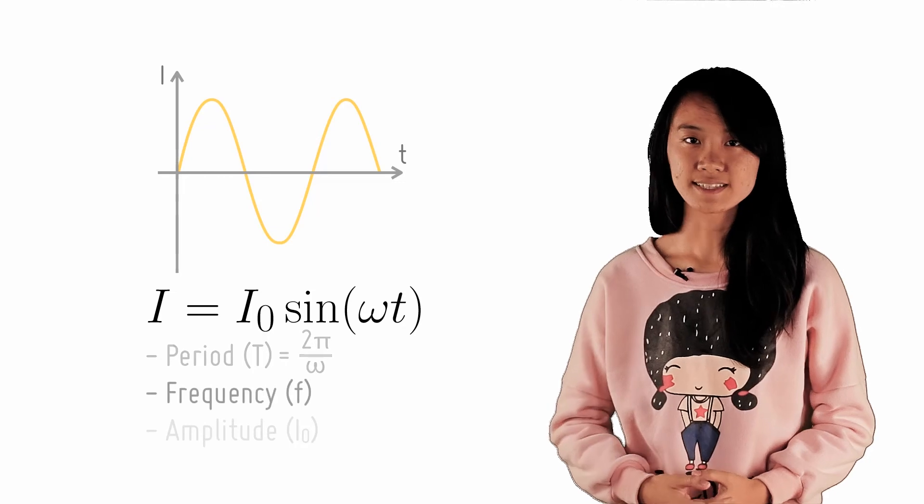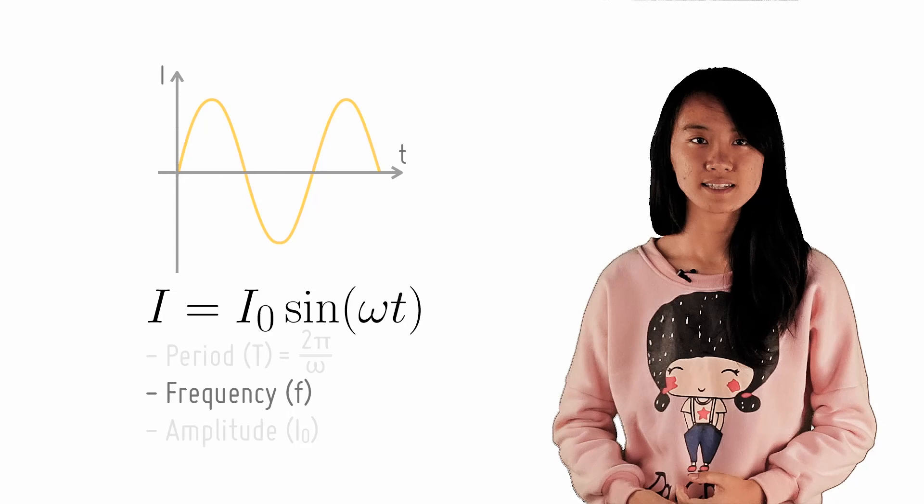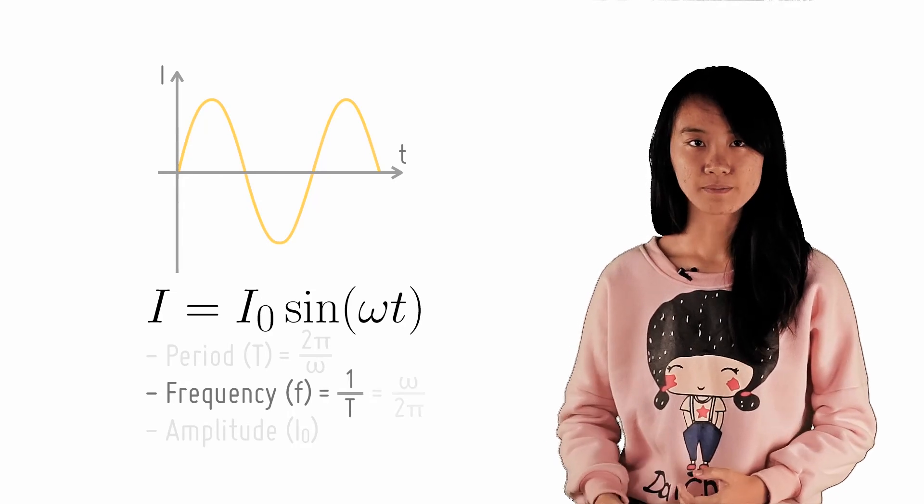Next, frequency. Recall that this is the number of complete cycles per second, and hence can be easily given by 1 over t, or ω over 2π.